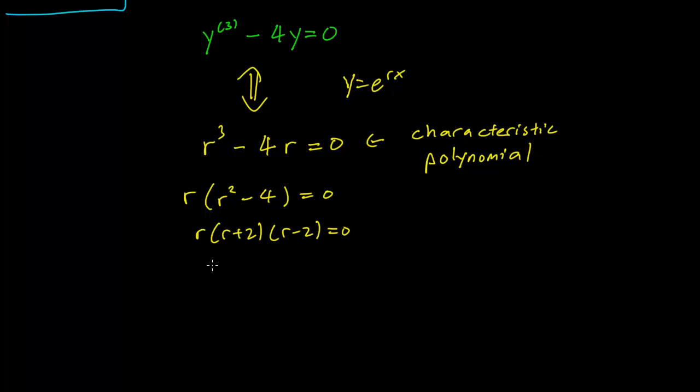We have r and clearly r must equal 0, plus 2, or minus 2. Those are the only possibilities to make this expression 0. These are our three roots.